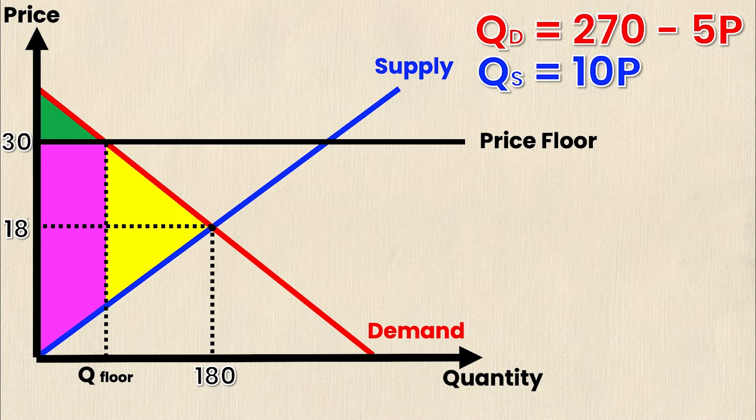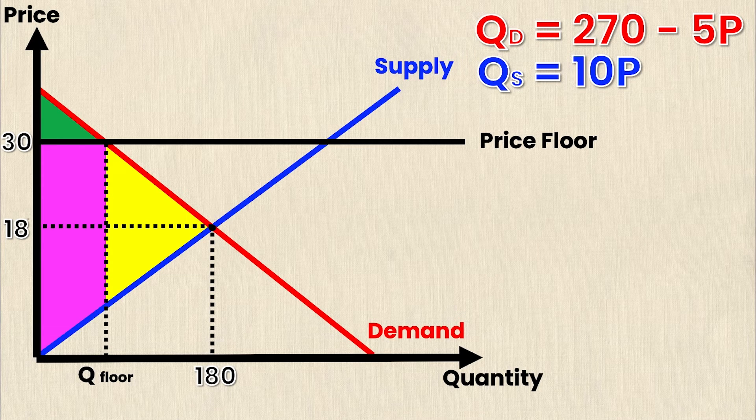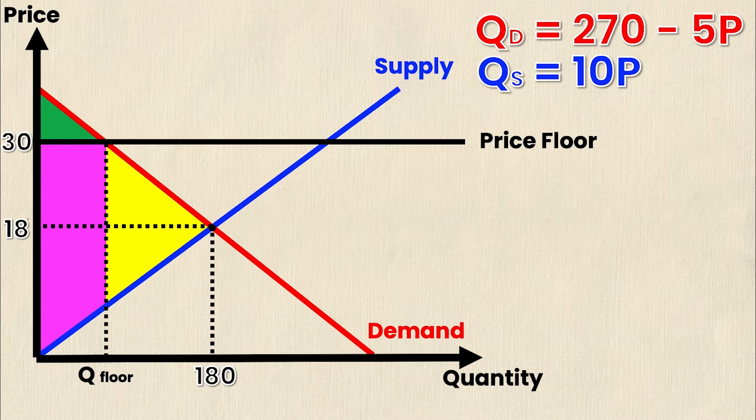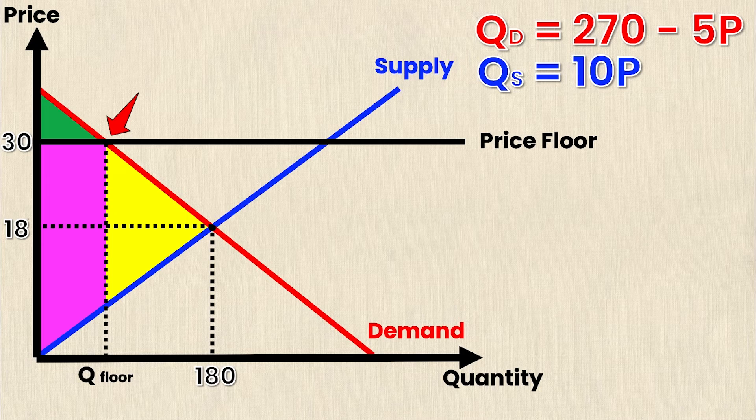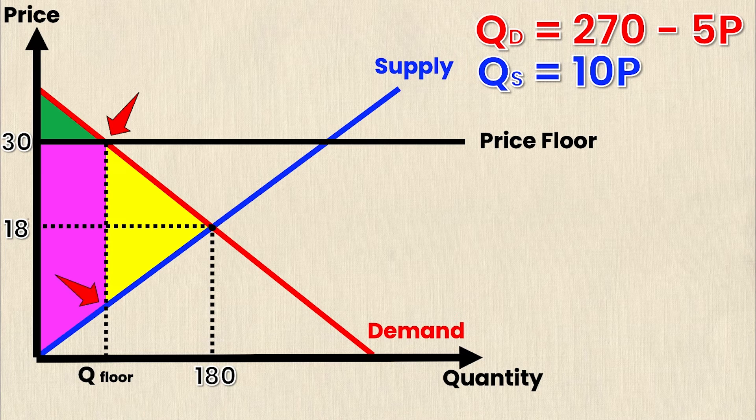But what if our teacher or professor wants us to calculate the magnitude of the deadweight loss? How do we do that? Well there's two key numbers that we don't know just yet that we need to solve. The first is Q floor, because Q floor intersects the demand curve at a price of 30. The other point we need is where Q floor intersects the supply curve. So these two values are what we're going to solve for next. Once again we're trying to calculate the area of that yellow triangle, so the only dimension we don't know yet is the base and we need these two values to figure it out.